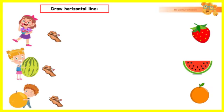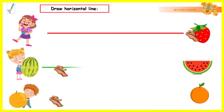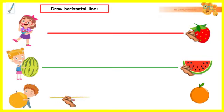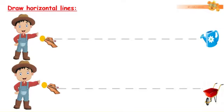And now, kids, let's practice. Let's draw some horizontal lines. Are you ready? Let's draw more horizontal lines. Let's match the gardener to his planting tools.